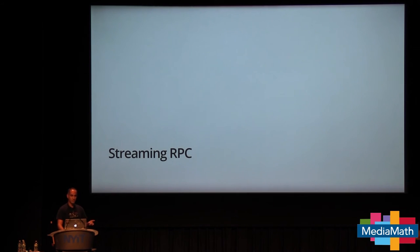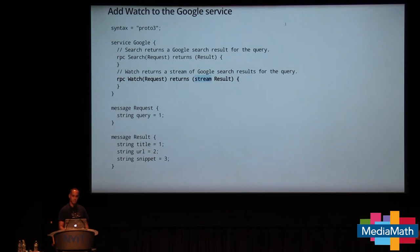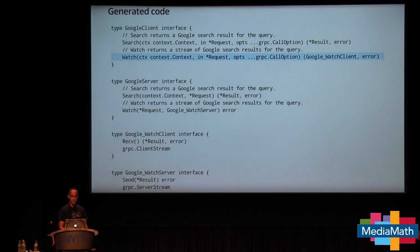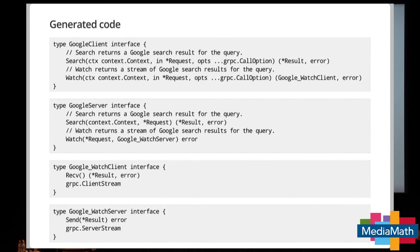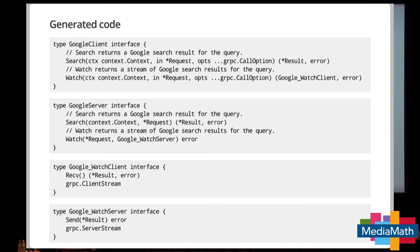Now we'll add Watch to the service. Watch is similar to Search but instead of returning a single result, it returns a stream of results — a unidirectional stream from server to client. The only difference in the proto signature is stream Result instead of Result. The generated code adds the Watch method — on the client side it returns a GoogleWatchClient with a Receive method returning results; on the server side the parameter is GoogleWatchServer with a Send method. Receive returns a result and error; Send takes a result and returns an error.